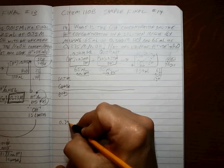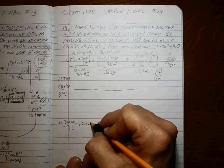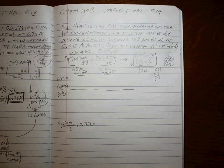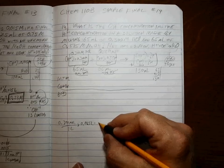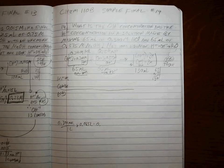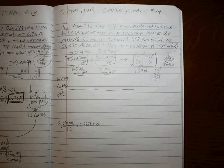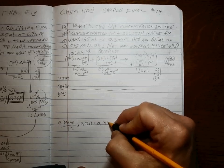So, 0.300 moles per one liter times 0.065 liters equals. So how much is that? What does that give you?